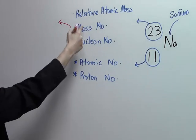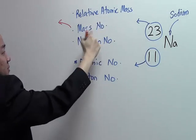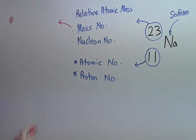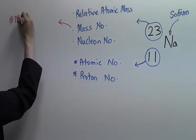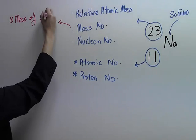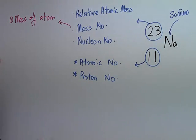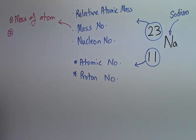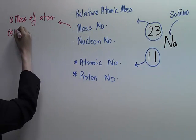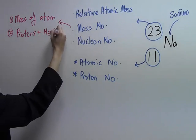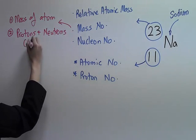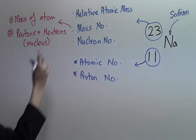The relative atomic mass or mass number tells you two things. First, it tells you the mass of the atom. Second, it tells you the number of protons plus neutrons inside the nucleus of the atom.